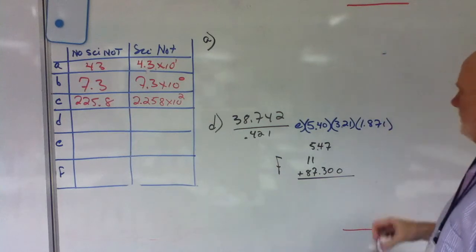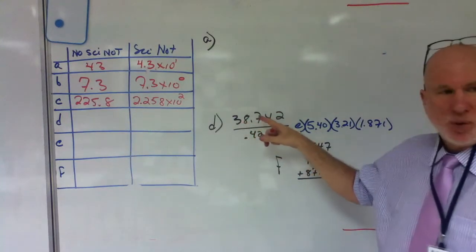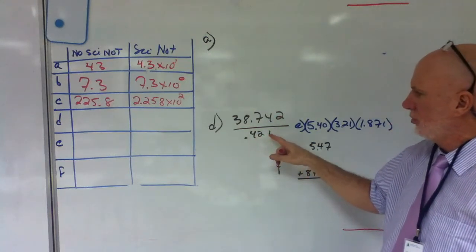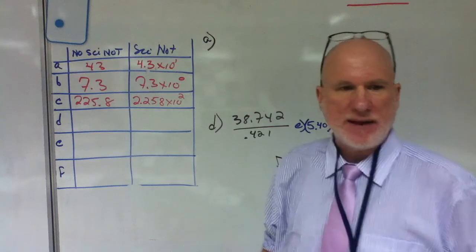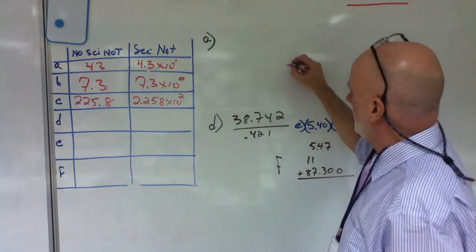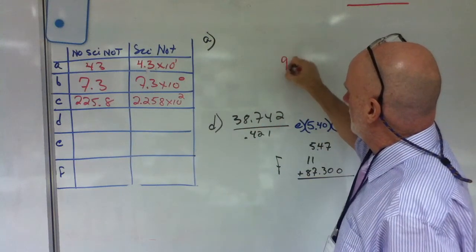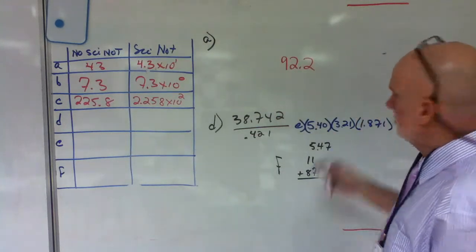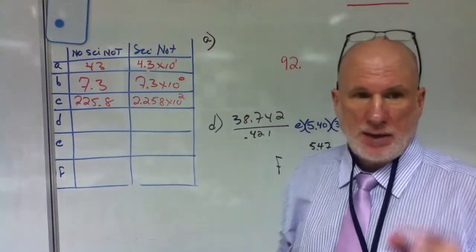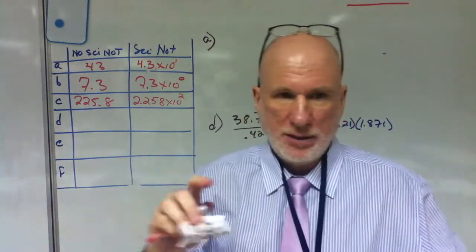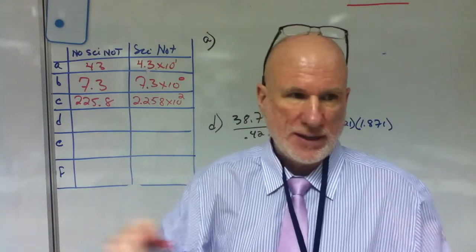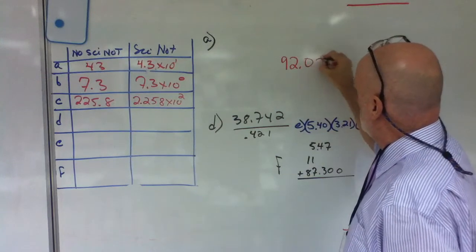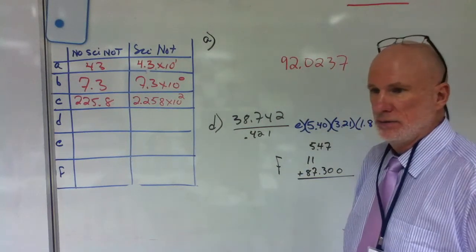All right. Next one. 38.742 divided by 0.421. What is it mathematically? What's the mathematical answer? 92.0. Could you give it to me, like one person? I hear three people. It's like quadraphonic stereo here with four people. 92.0237. Is that good?